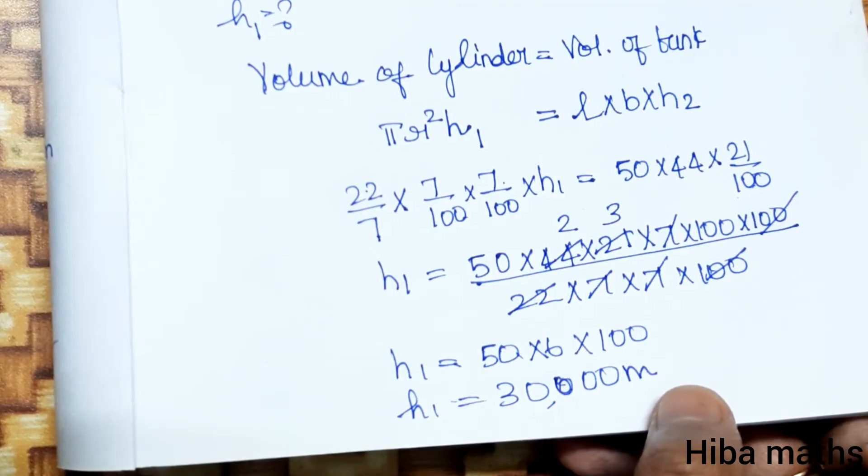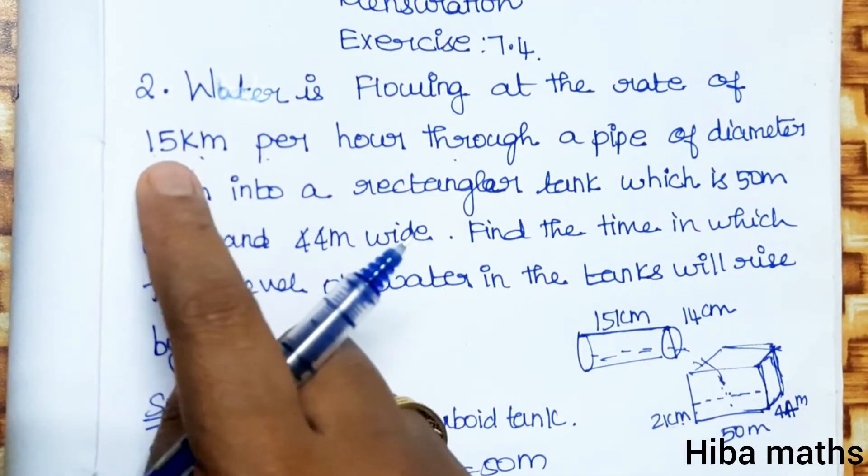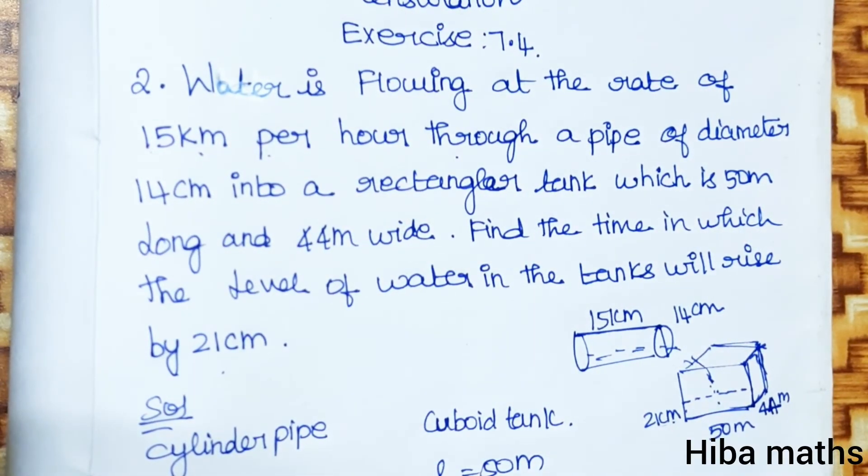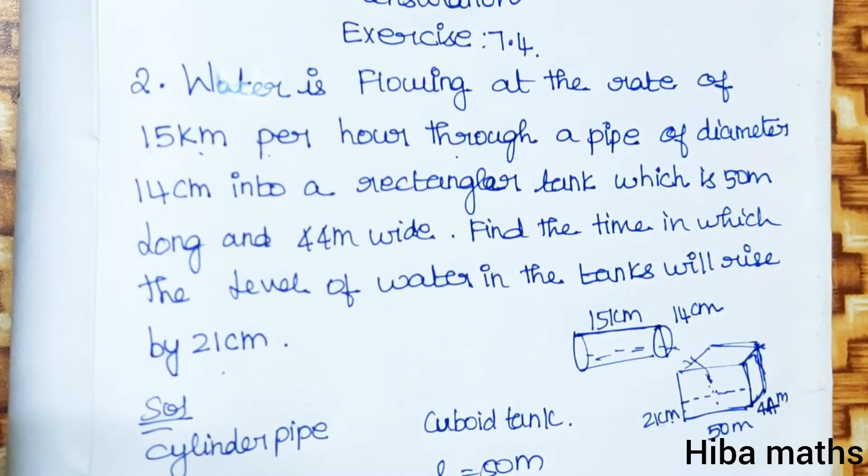If 1 hour for 15 km, then we divide to find the time for 30,000 meter. So we have the answer.